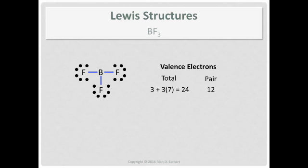Then, the next rule says if the central atom has fewer than four pair, make multiple bonds to satisfy the octet rule. So that's what you would normally do at this stage. You would pick one of the fluorines and do a multiple bond and get the boron up from three pair of electrons to sharing four.